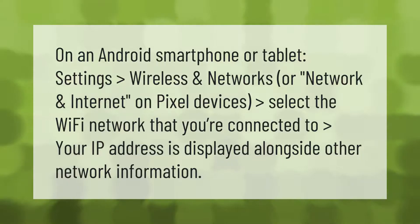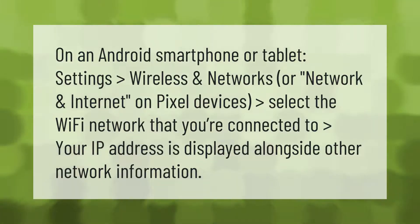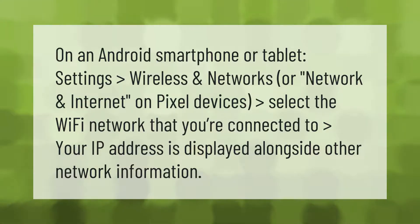On an Android smartphone or tablet, go to Settings, then Wireless and Networks — or Network and Internet on Pixel devices. Select the Wi-Fi network that you're connected to. Your IP address is displayed alongside other network information.